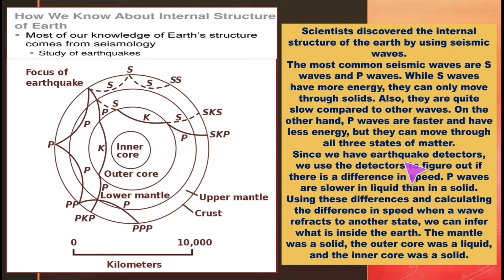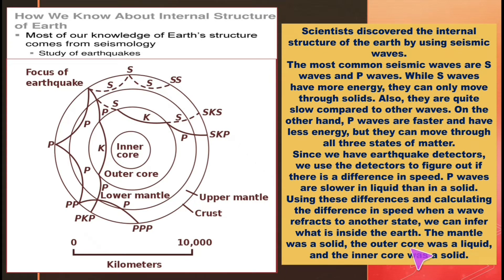Since we have earthquake detectors, we use them to figure out if there is a difference in speed. P waves are slower in liquid than in a solid. Using these differences and calculating the differences in speed when a wave refracts to another state, we can infer what is inside the earth — the mantle was solid, the outer core was liquid, and the inner core was solid.